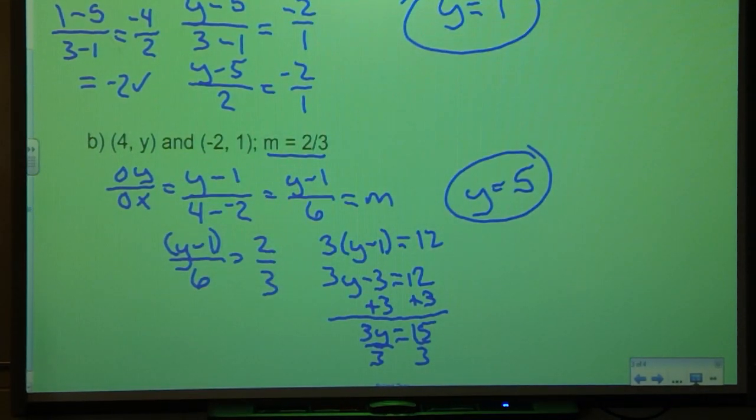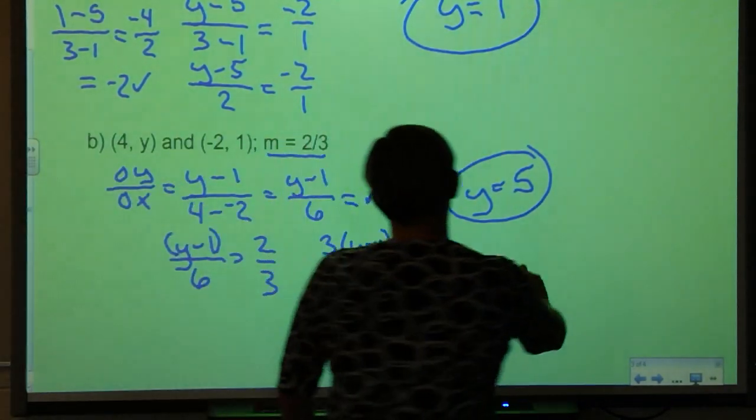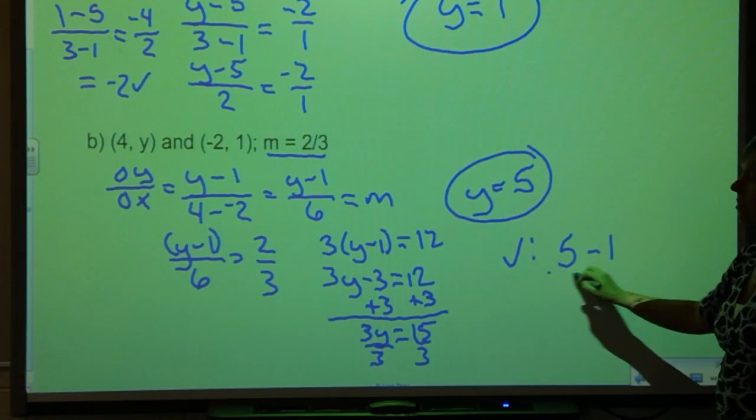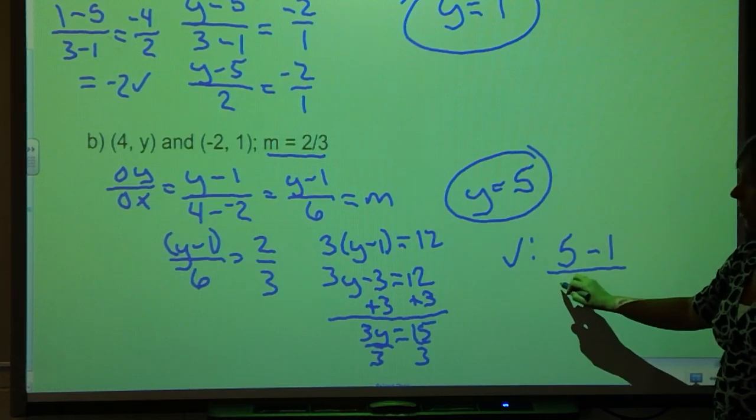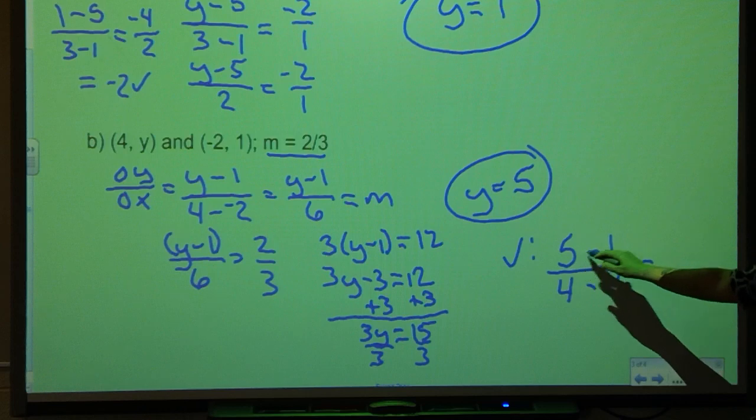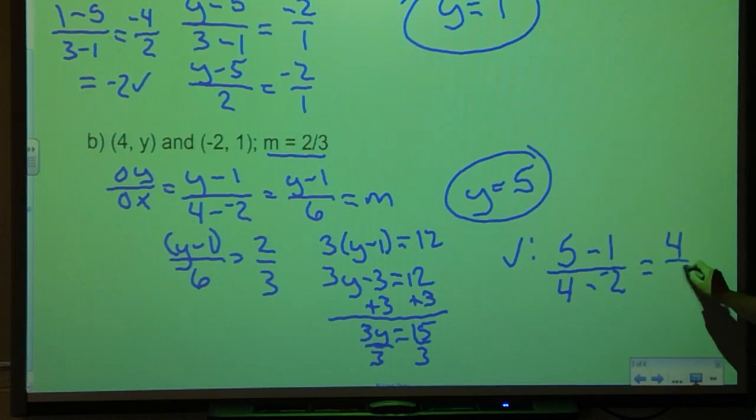Again, to complete my check, I go back and plug it in. And I'm going to say 5 minus 1 over 4 minus -2. Here I get 4. Down here I get 6, which is equal to 2/3, which is the slope I started with.